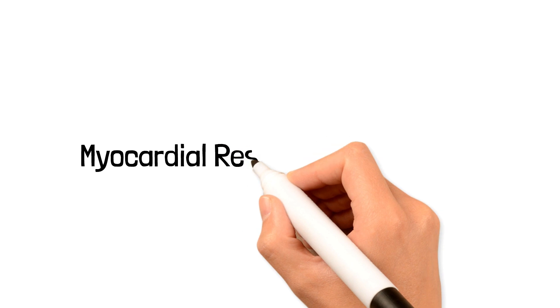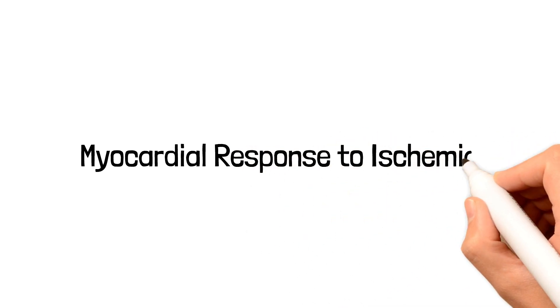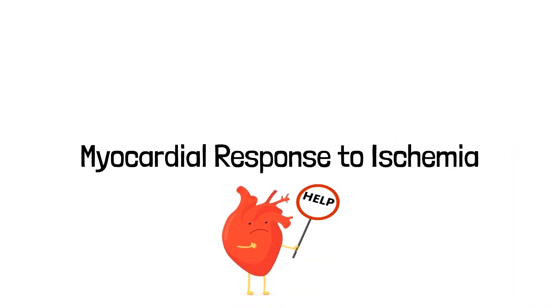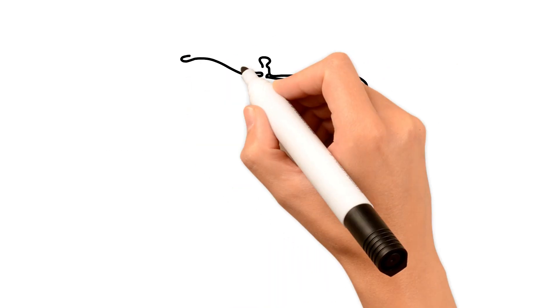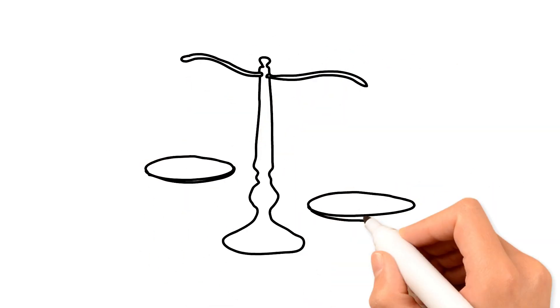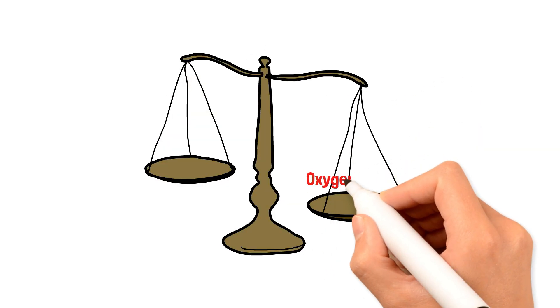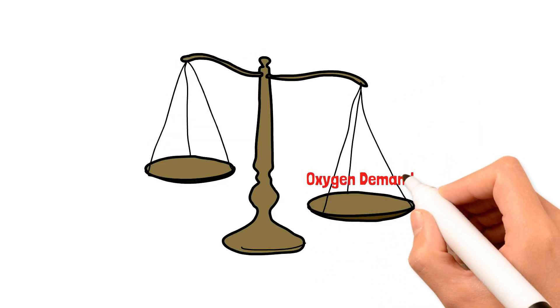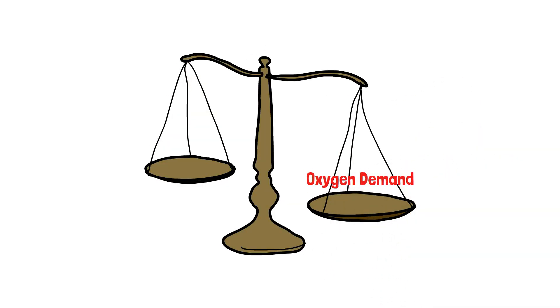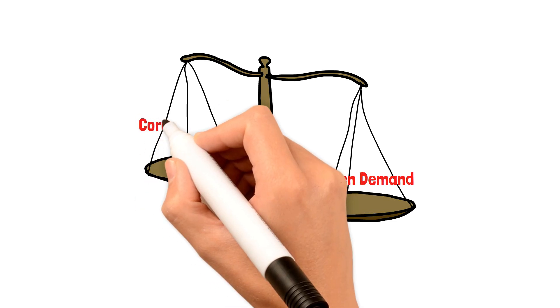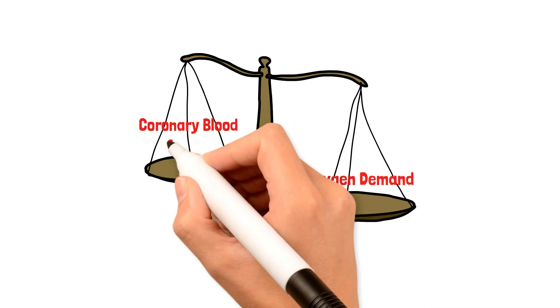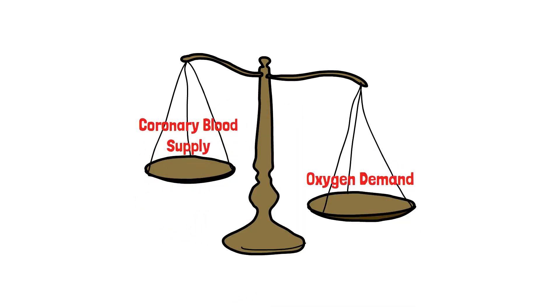In this video we are going to talk about the myocardial response to ischemia. Myocardial ischemia is basically an imbalance between the oxygen demand of the myocytes and the coronary blood supply.